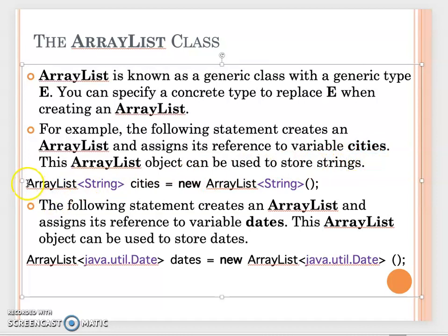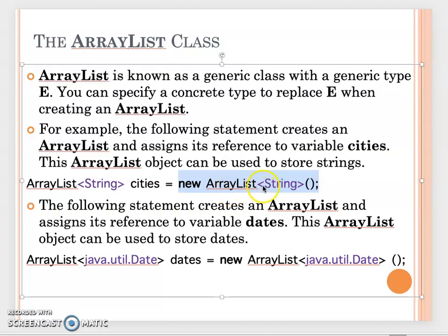For the declaration, you write ArrayList, then the data type in angle brackets, then the object reference name. This declares an ArrayList variable called cities that refers to a String ArrayList. Then you use new to actually create the ArrayList object using the default constructor, which creates an empty String ArrayList.